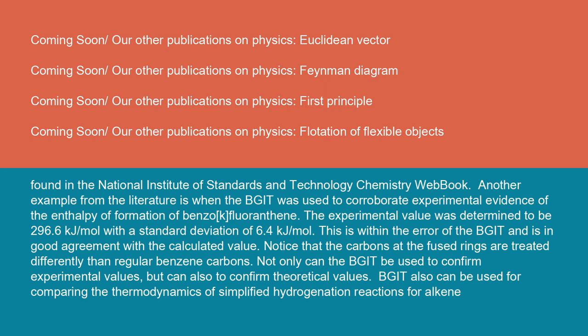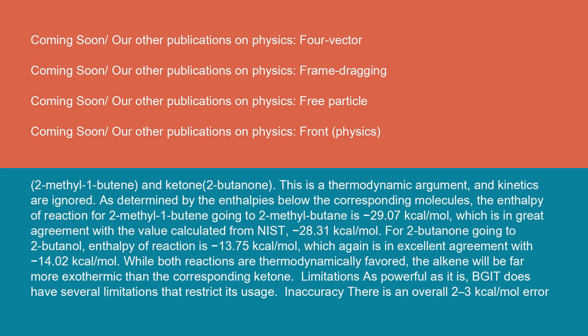BGIT also can be used for comparing the thermodynamics of simplified hydrogenation reactions for alkene 2-methyl-1-butene and ketone 2-butanone. This is a thermodynamic argument and kinetics are ignored. As determined by the enthalpies below the corresponding molecules, the enthalpy of reaction for 2-methyl-1-butene going to 2-methylbutane is -29.07 kcal/mol, which is in great agreement with the value calculated from NIST, -28.31 kcal/mol. For 2-butanone going to 2-butanol, the enthalpy of reaction is -13.75 kcal/mol, which again is in excellent agreement with -14.02 kcal/mol. While both reactions are thermodynamically favored, the alkene will be far more exothermic than the corresponding ketone.